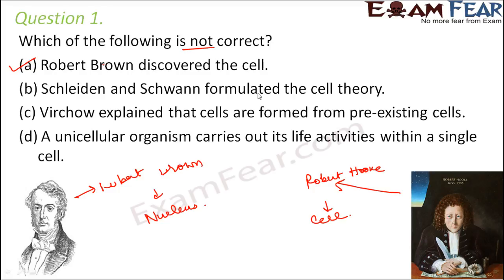Schleiden and Schwann formulated the cell theory — yes, that is right. Virchow explained that cells are formed from pre-existing cells, and that is how Virchow modified the cell theory. A unicellular organism carries out all its activities within a single cell because they have no other choice — they are made up of only one cell, so that one cell has to carry out all the activities.